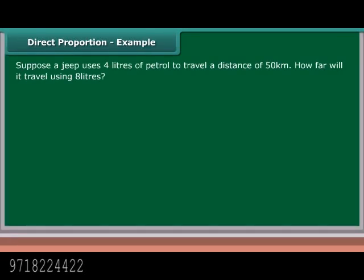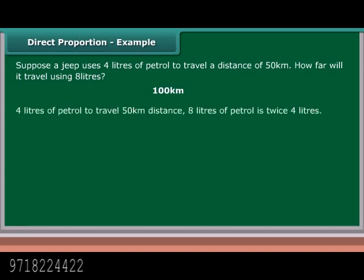Example: Suppose a jeep uses 4 liters of petrol to travel a distance of 50 kilometers. How far will it travel using 8 liters? The answer is 100 kilometers. For 4 liters of petrol to travel 50 kilometers — 8 liters of petrol is twice 4 liters, therefore the distance is 2 × 50 = 100 kilometers.